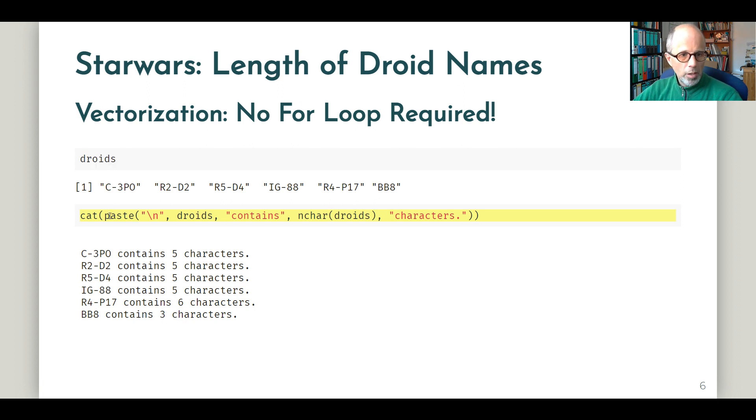Conveniently, this also works for the slightly more complicated example where we want to print the number of characters of each name to the screen. We can do that without using an explicit for loop because the functions that we're using here, like paste and nchar, are vectorized. We can pass them a vector and they will loop through element by element and give us the results.